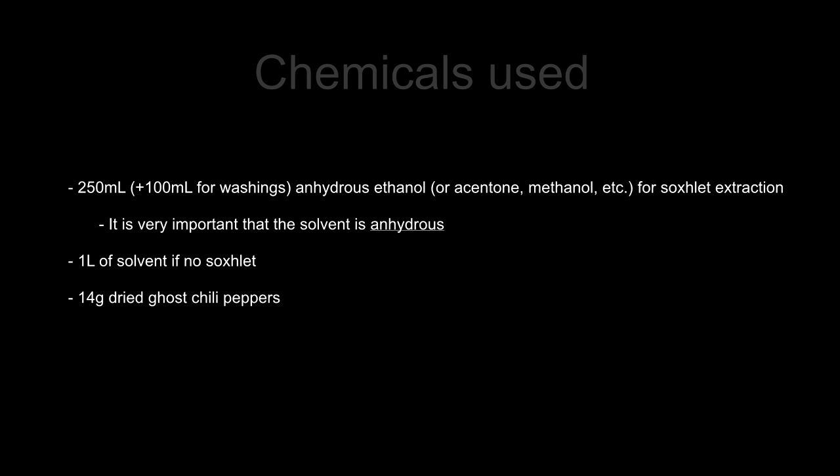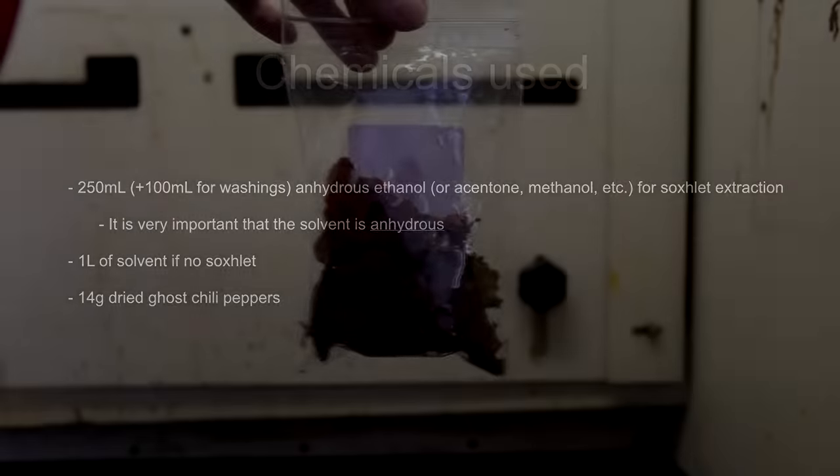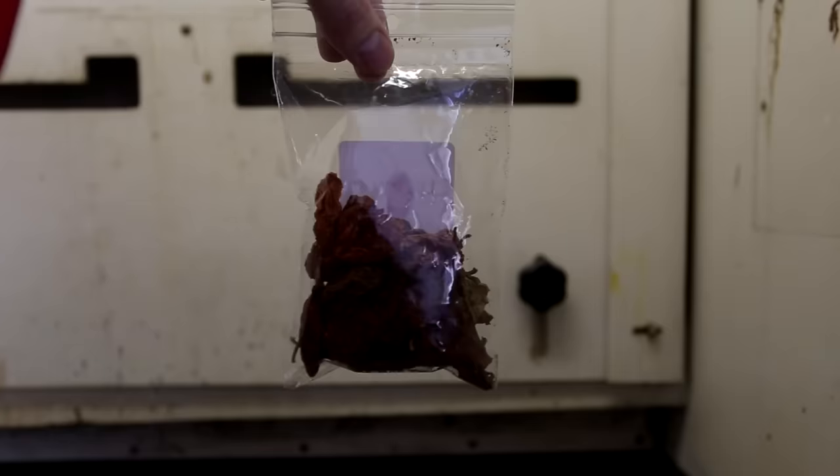For the chili peppers, I used 14 grams of dried ghost chili peppers. In theory, you can use any chili pepper that you like, but it's best to get the most potent one. It is extremely important that the peppers that you use are dried. If you buy fresh peppers, simply cut them up and dry them in an oven thoroughly before using them. For the extraction, I used pre-dried ghost chili peppers.